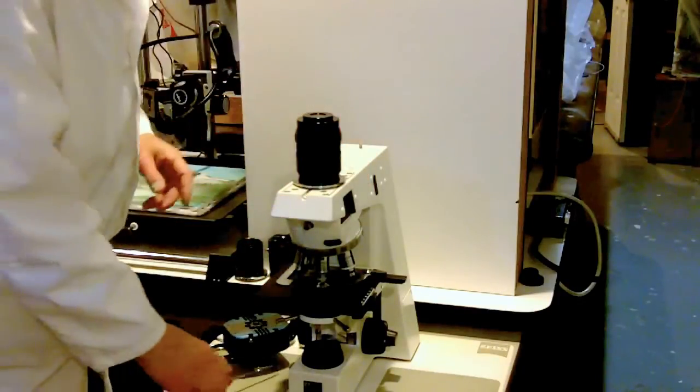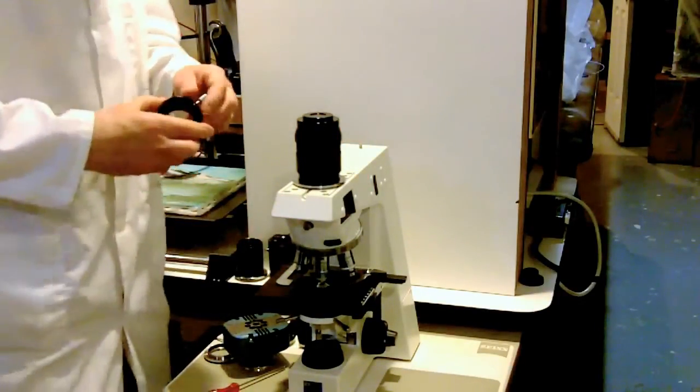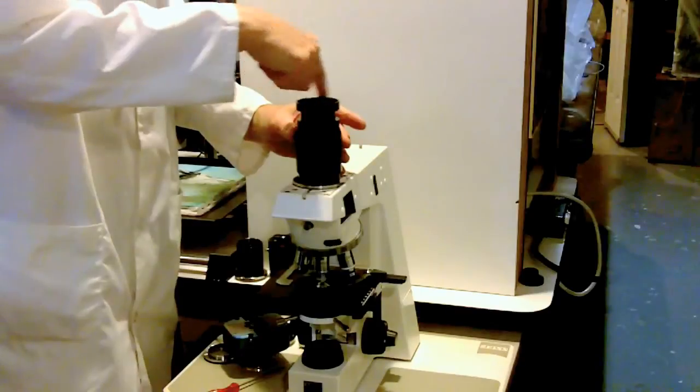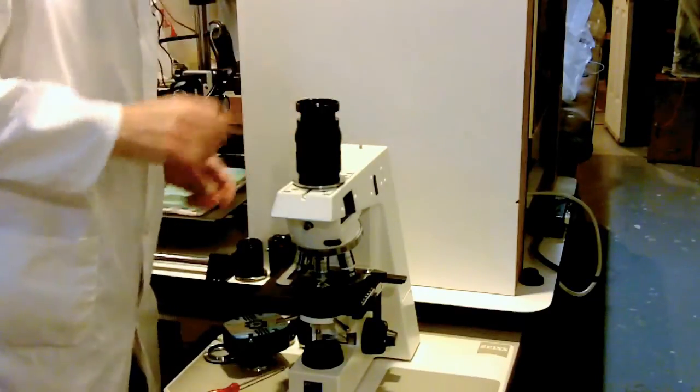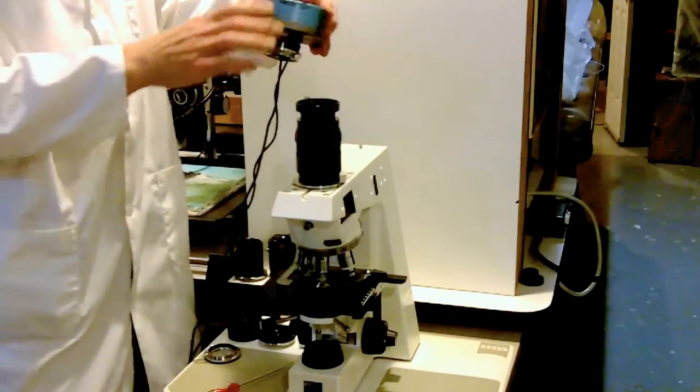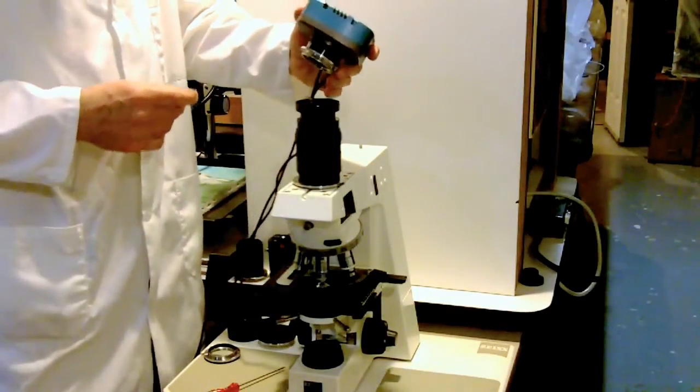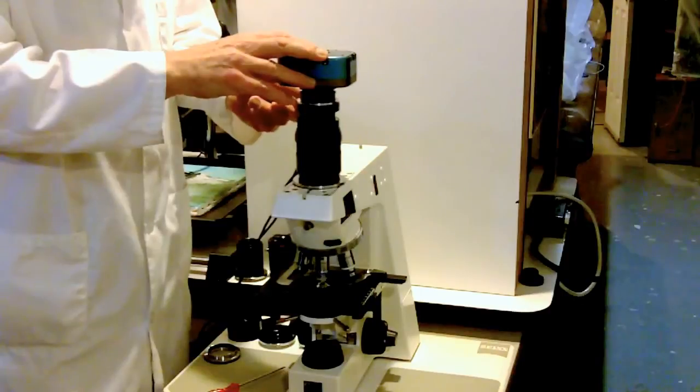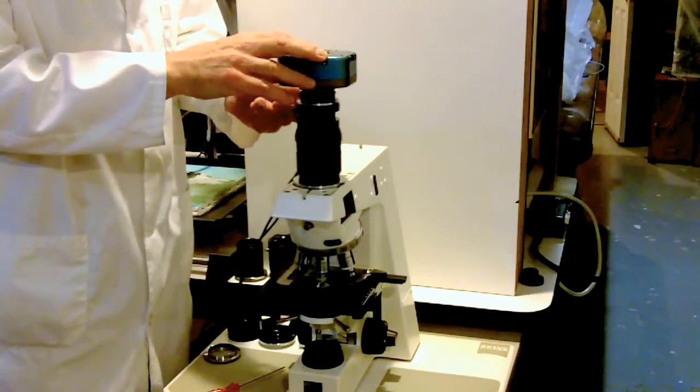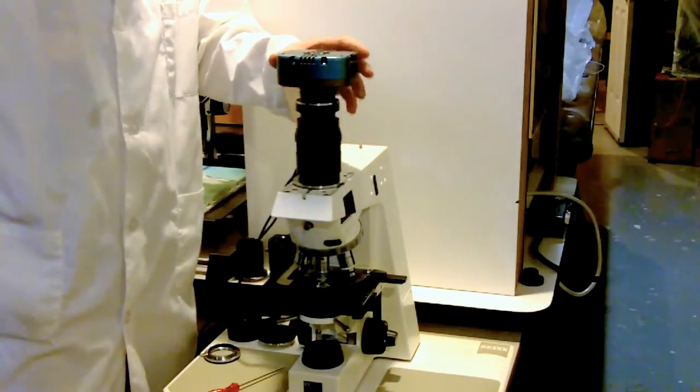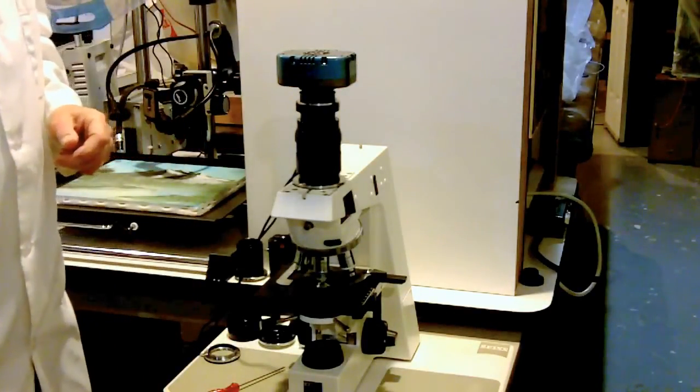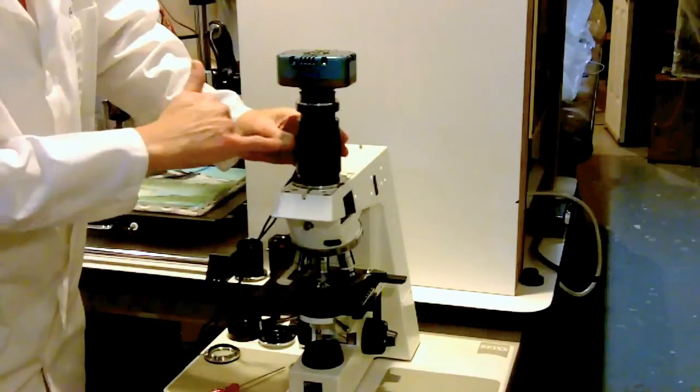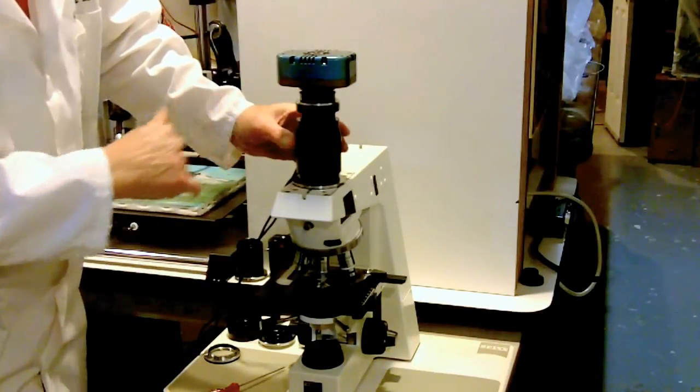We secure it with a screw. And one of the more popular cameras that's out there being used in microscopy is the so-called small format or C-mount camera. Here's a small format C-mount camera. You can get these with Peltier cooling or high-definition real-time 2K or 4K display. And here you can see we've got the small format C-mount camera mounted onto the microscope.